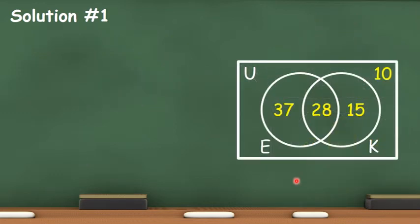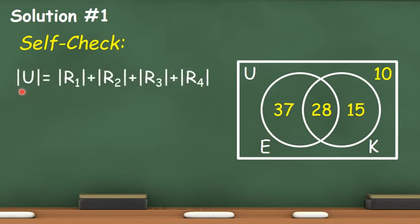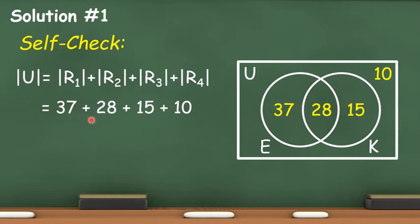Now that we have completed the four values in the four regions, we are going to self-check. The cardinality of U is the sum of the elements in region 1, region 2, region 3, and region 4. Substituting the values, we have 37 plus 28 plus 15 plus 10, and the sum is 90. Recall that in the problem the cardinality of U is 90, meaning our answer is correct.